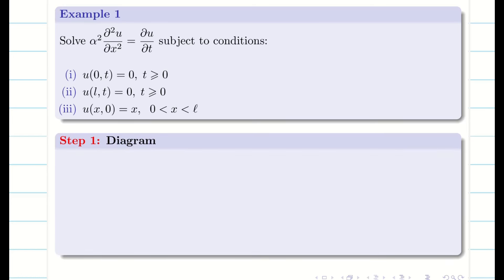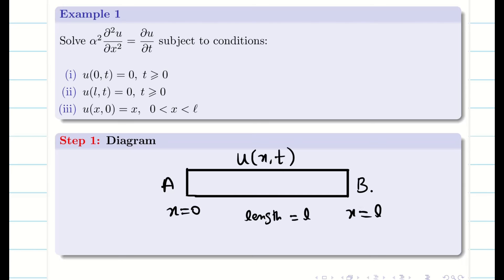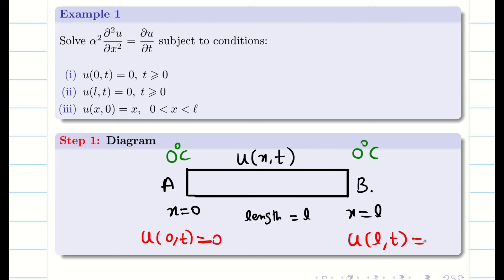Step 1 is very important — we have to draw the diagram. A metal rod of length l centimeter; I will take two sides a and b. One side is x equal to zero and the other side is x equal to l, since the length is l. The temperature function is u(x, t), and it is said that both ends are kept at zero degrees Celsius. So the two boundary conditions are u(0, t) = 0 and u(l, t) = 0.